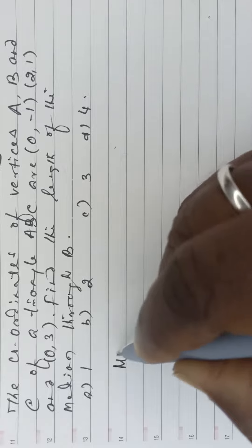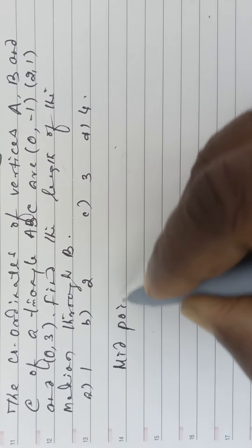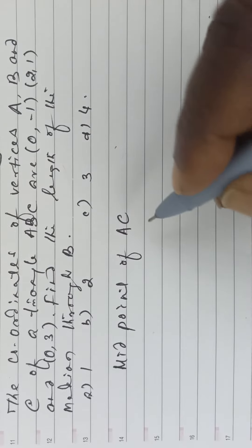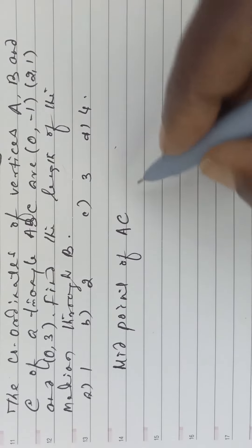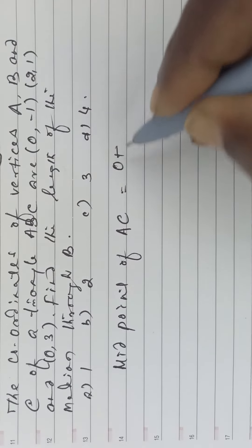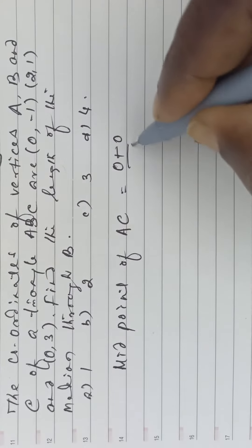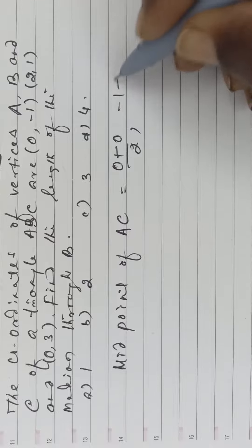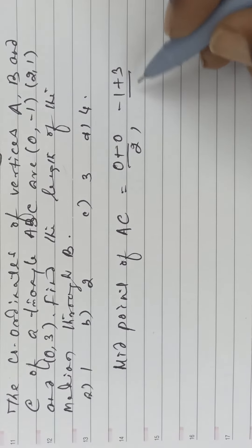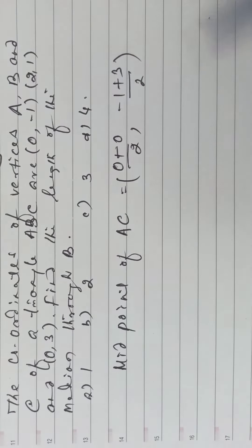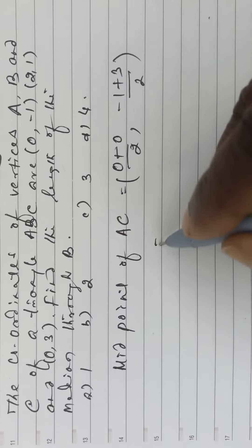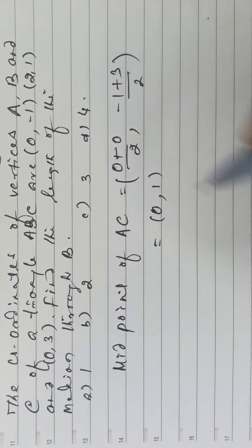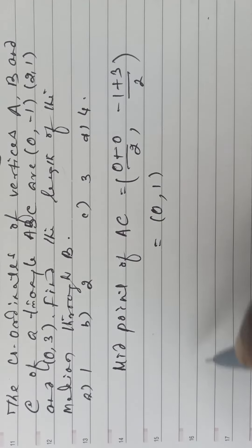Midpoint of AC is equal to (0 plus 0) by 2, comma (minus 1 plus 3) by 2. This gives (0, 1). This is the foot of the median through B.